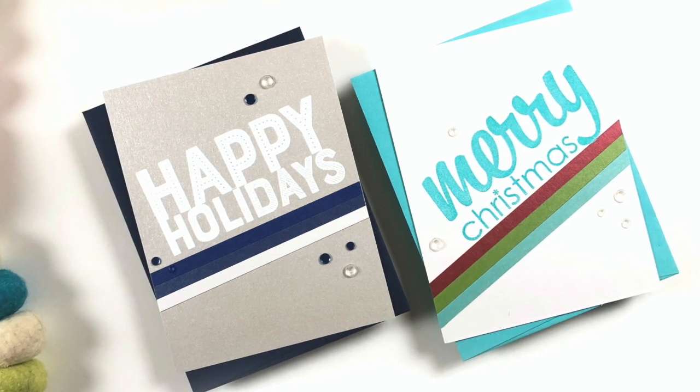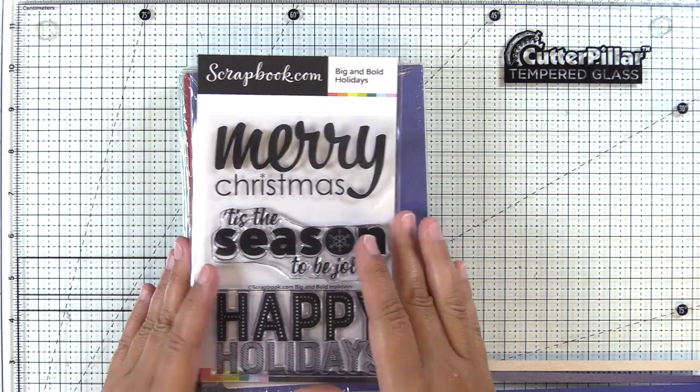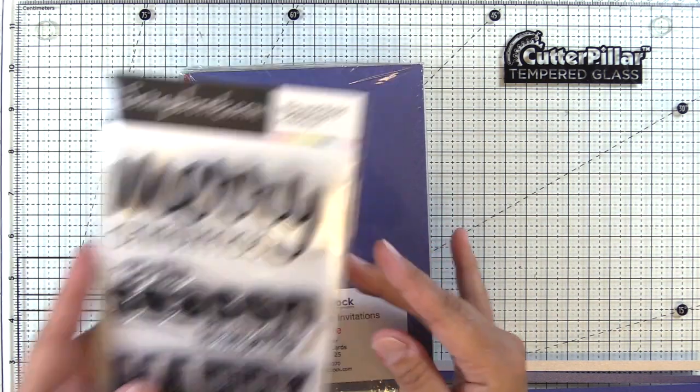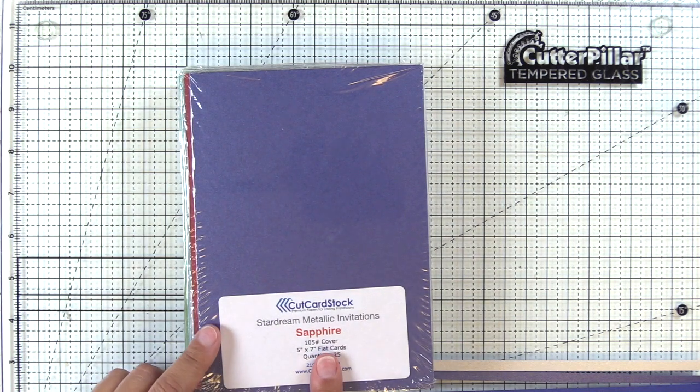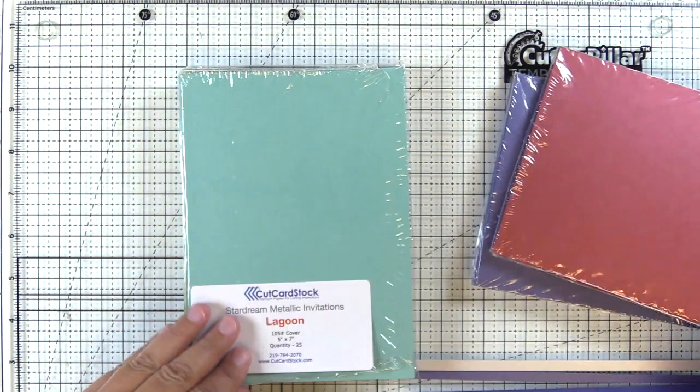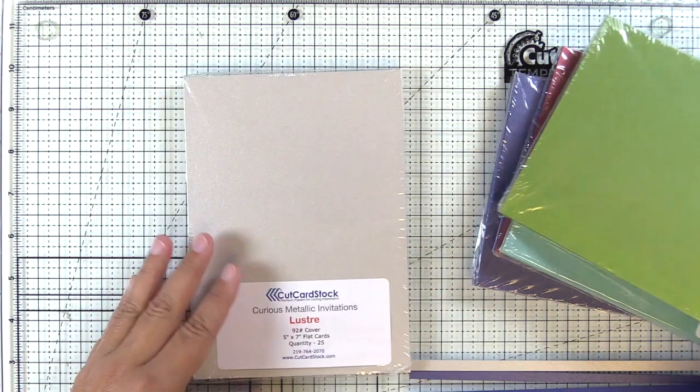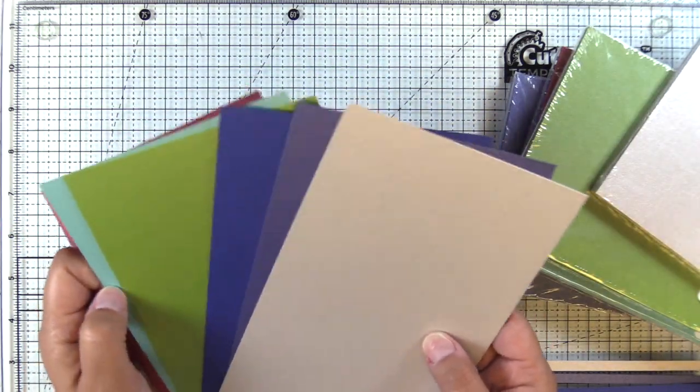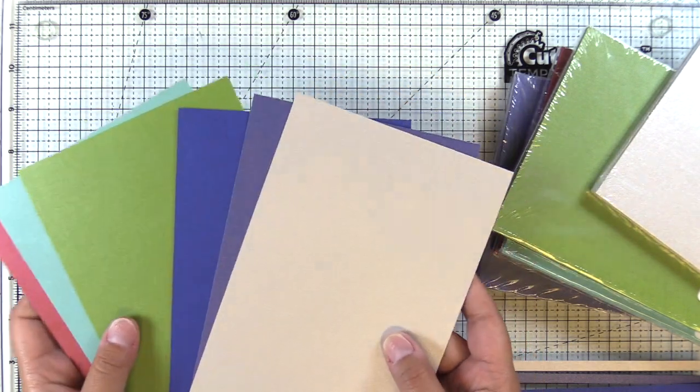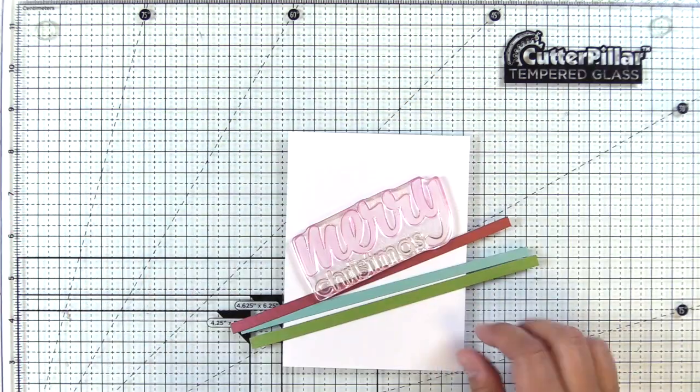So we are going to get started now. I'm using the Big and Bold Holiday stamp set from scrapbook.com and then some of my favorite metallic cardstocks. Star Dream Metallics are on sale this month over at cutcardstock.com, a lot of these you can get in the $1.99 section. We're going to be using Mars, Lagoon, Fairway, Electric Blue, Sapphire, and Luster today.